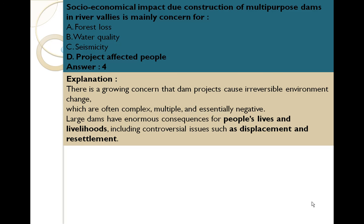The socio-economic impact due to construction of multi-purpose dams in river valleys is mainly concerned with: Option A: Forest loss, Option B: Water quality, Option C: Seismicity, Option D: Project affected people. The correct answer is Option D, project affected people. There is a growing concern that dam projects cause irreversible environmental change which is often complex, multiple, and essentially negative. Large dams have severe consequences for people's lives and livelihoods, including controversial issues such as displacement and resettlement.